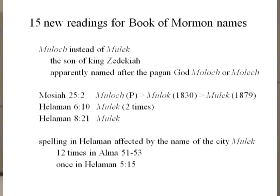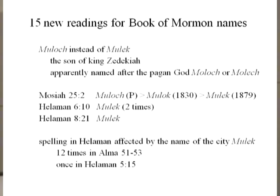There are 15 new readings for Book of Mormon names. The most interesting is 'Mulek' being spelled M-U-L-O-C-H — for the son of King Zedekiah. The implication is that Zedekiah named his son after the god to whom they sacrificed children — a rather ominous aspect of King Zedekiah.